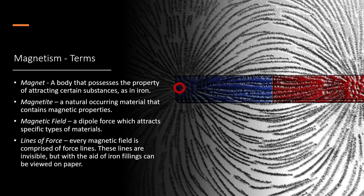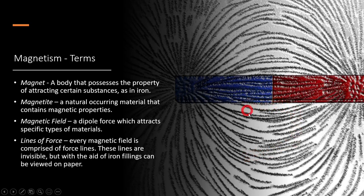The lines of force - I'm showing a picture here. This is an old experiment that used to be done in classrooms, where you have a bar magnet - the red and blue bar - and then you put a piece of clear plastic over the top and sprinkle iron filings. Iron is magnetic, and the iron filings will align themselves on these lines of force that are entering and leaving the magnet. It's really a neat little experiment.